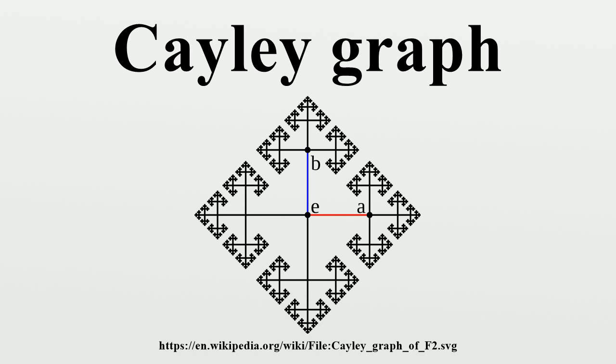Similarly, if is the finite cyclic group of order n and the set S consists of two elements, the standard generator of G and its inverse, then the Cayley graph is the cycle.